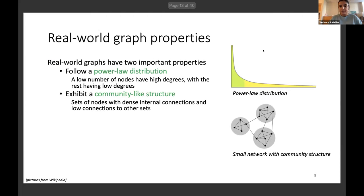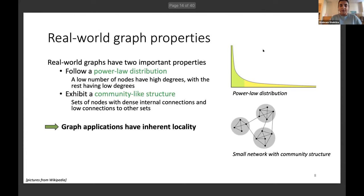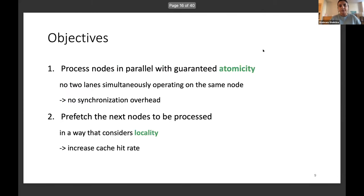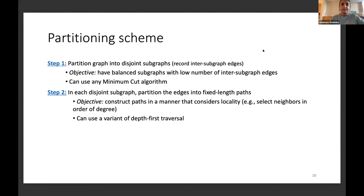Real-world graphs follow a power-law distribution and exhibit community-like structure, giving them inherent locality. Our partitioning scheme has two objectives: process nodes in parallel with minimum synchronization overhead — guaranteeing atomicity by ensuring the same node doesn't appear in different vector lanes simultaneously — and fetch nodes considering locality to increase cache hit rate. First, we partition the graph into disjoint subgraphs using a minimum-cut algorithm. Then, inside each subgraph, edges are further partitioned into fixed-length paths using a variant of depth-first traversal that selects neighbors by degree.